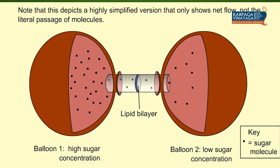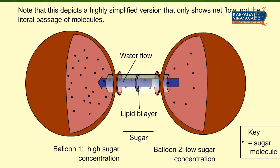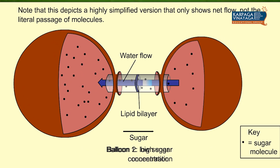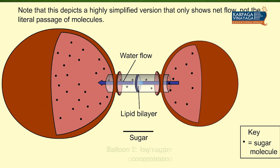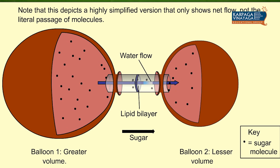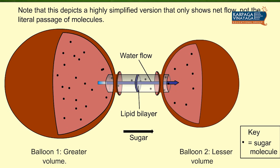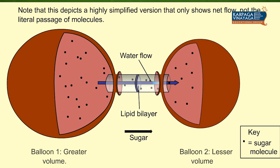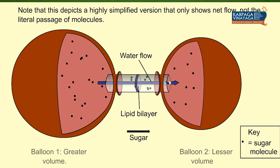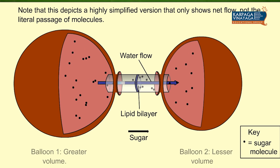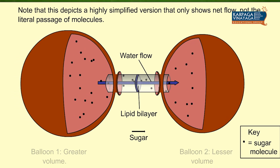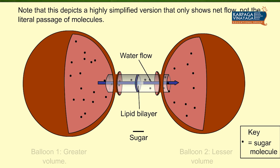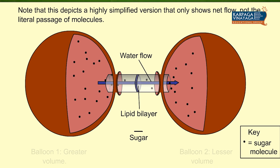The next example is osmosis. It uses the same type of experimental setup with a semi-permeable membrane, but here the movement of solute goes from higher concentration to lower concentration. After some time, both balloons reach the same concentration and equilibrium.